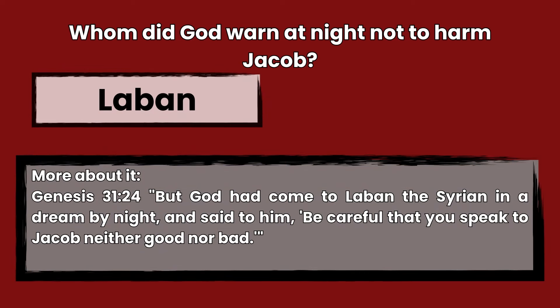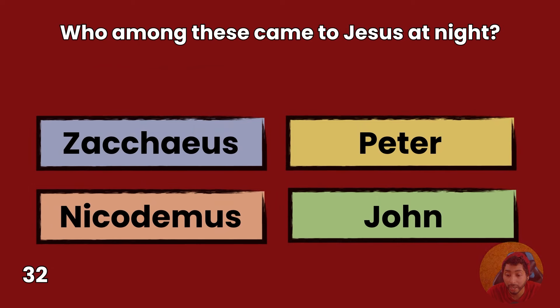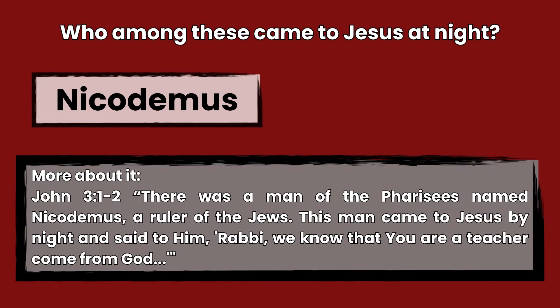Question 32: Who among these came to Jesus at night? Zacchaeus, Peter, Nicodemus, or John? Answer: Nicodemus. John 3:1-2 — There was a man of the Pharisees named Nicodemus, a ruler of the Jews. This man came to Jesus by night and said to him, Rabbi, we know that you are a teacher come from God.